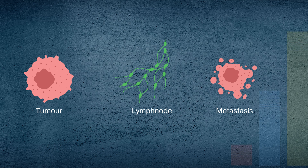The TNM staging system categorises cancer by the size of the primary tumour, involvement of nearby lymph nodes, and presence of distant metastasis.